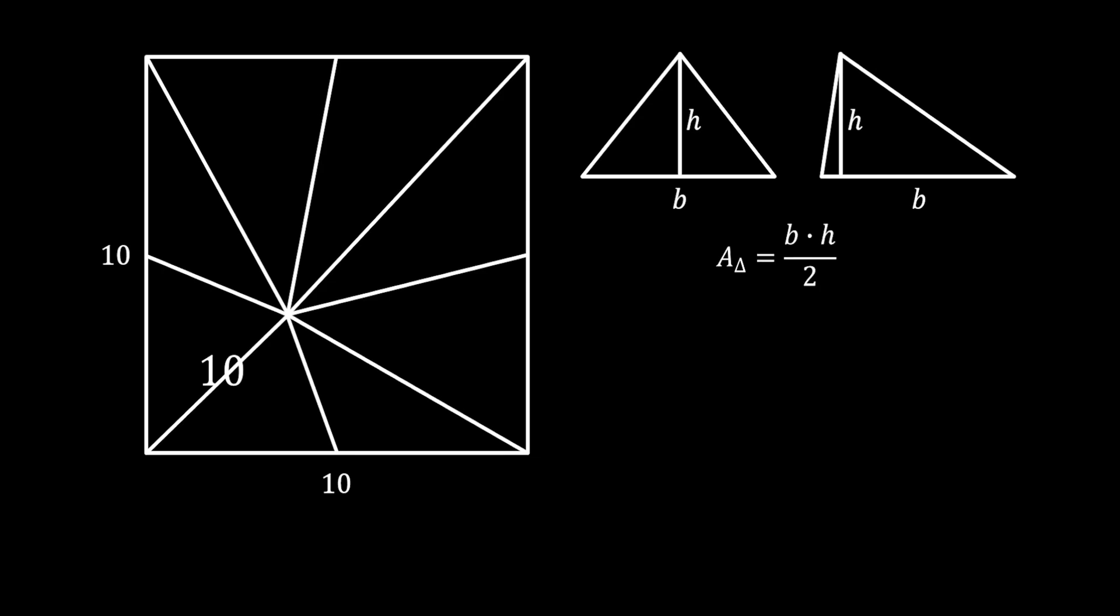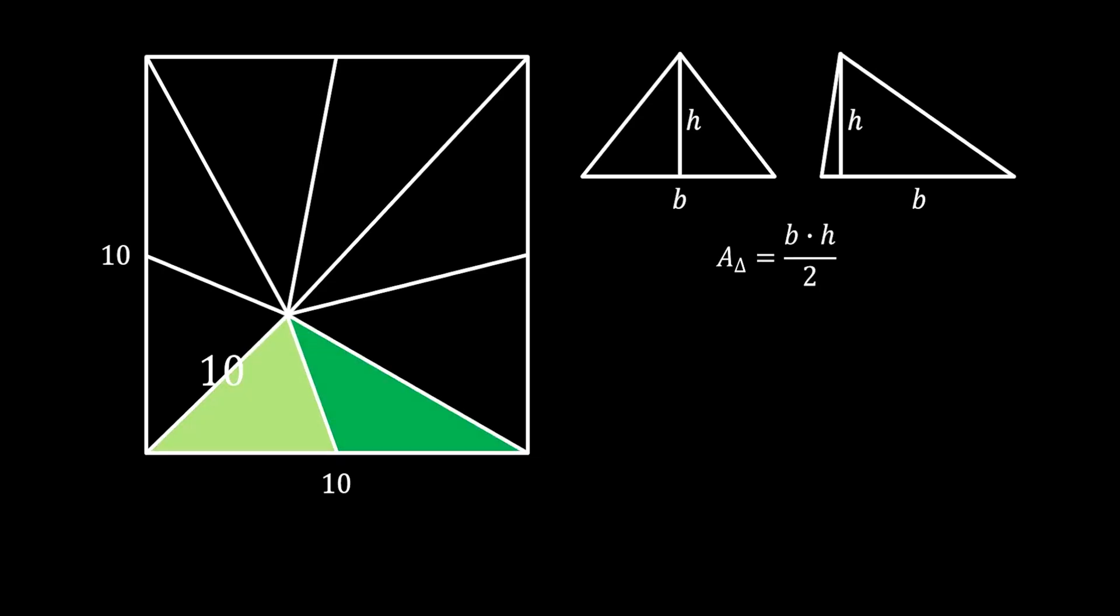So let's begin. Let's first take a look at the two triangles on the bottom. Those two triangles have the same base. Because, remember, their common line is pulled from the midpoint of the side of the square. This is the condition of our assignment.